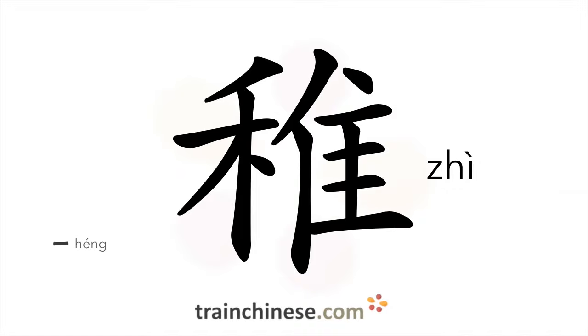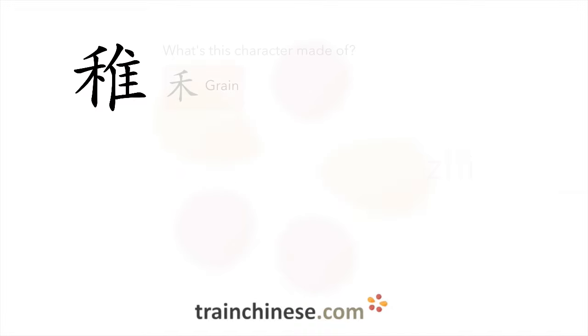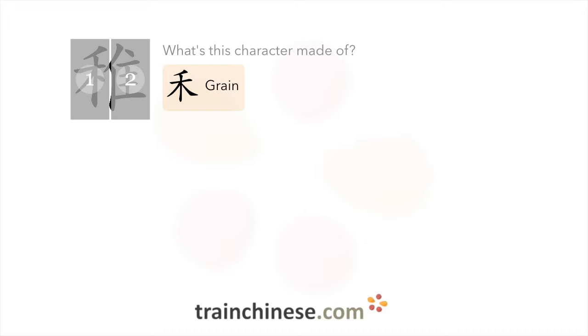Let's look at how this character breaks down. The radical for grain appears on this character. 河. 追.